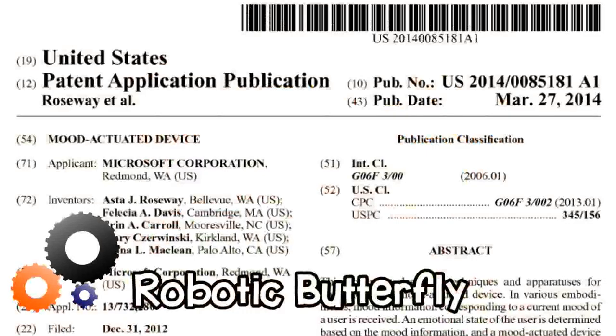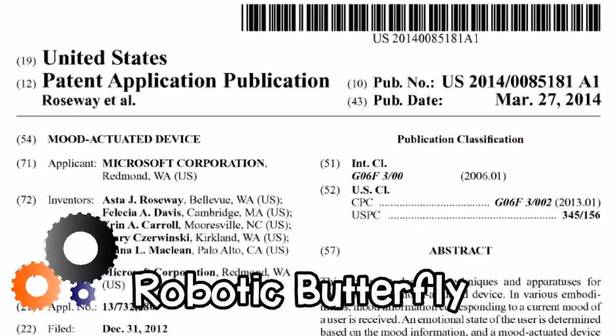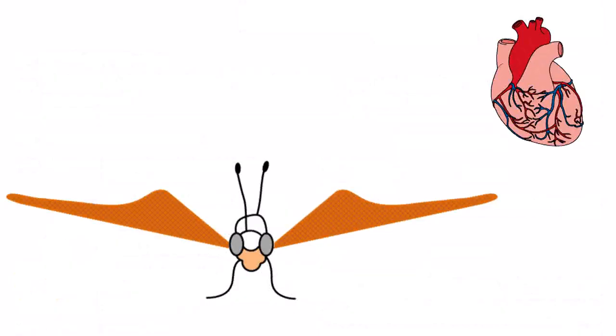While Google is inventing the future, Microsoft invents a mood-changing robotic butterfly, which might be the future in its own right.